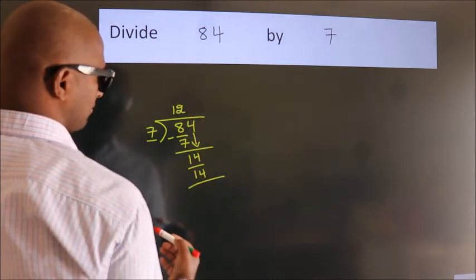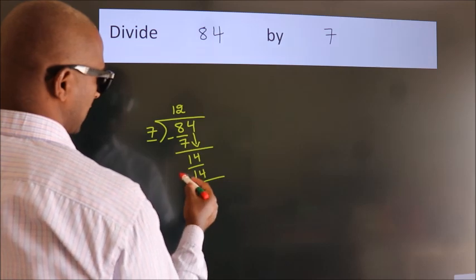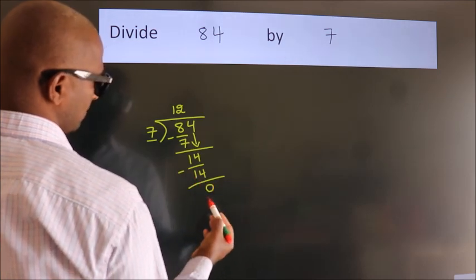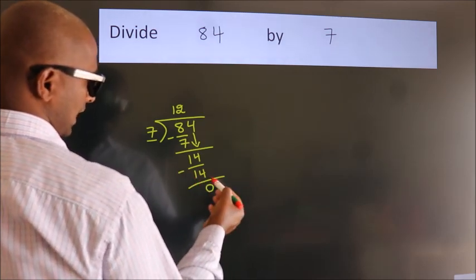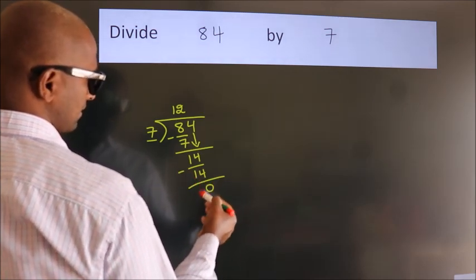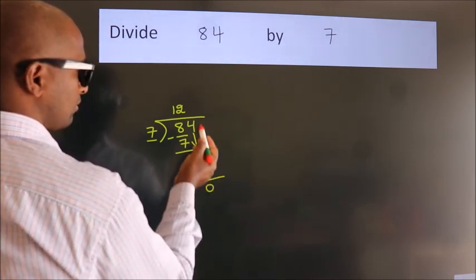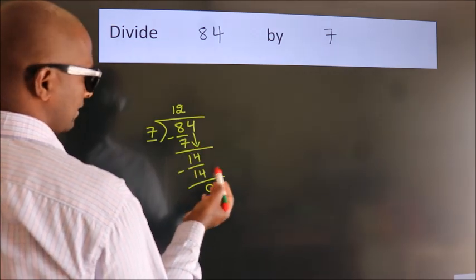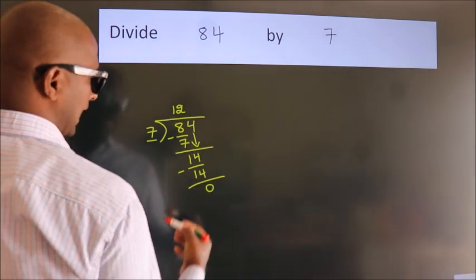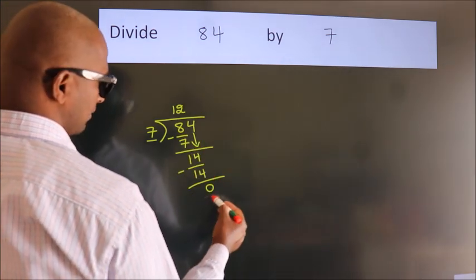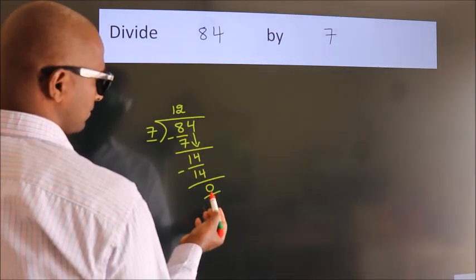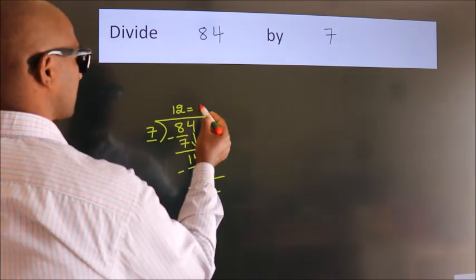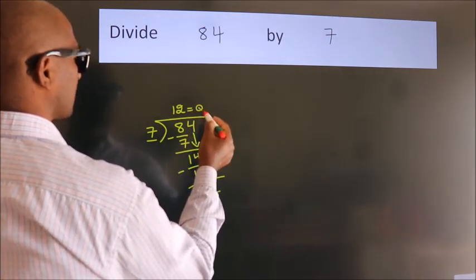Now we subtract and we get 0. After this, there are no more numbers to bring down, and we got remainder 0. So this is our quotient.